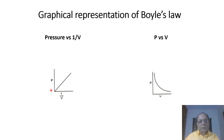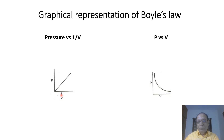As pressure increases, volume decreases, therefore 1/V increases. The value of the fraction increases because the denominator goes on decreasing. So there is a straight line passing through the origin, that is, through zero.